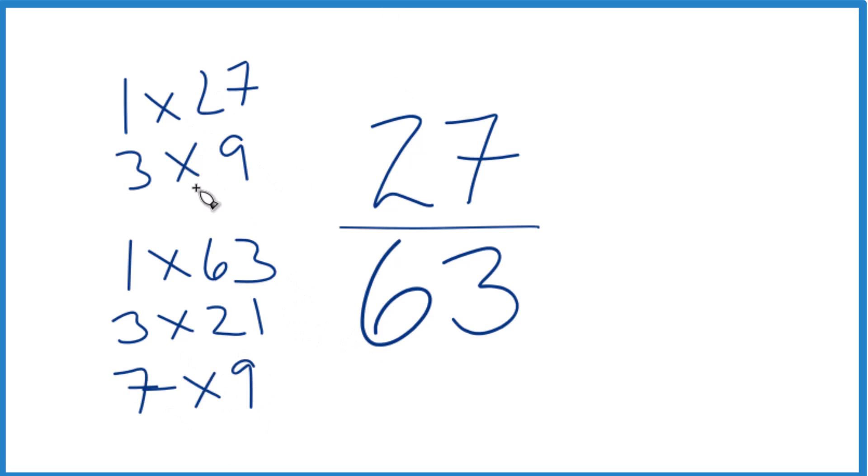So we look for a common factor, and we see 3 is the same, but look at that, there's 9. That's the greatest common factor. So we divide 27 by 9 and 63 by 9, and we'll have simplified our fraction.